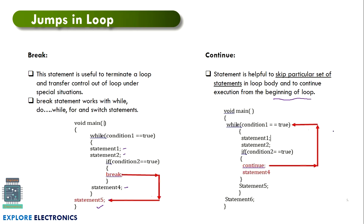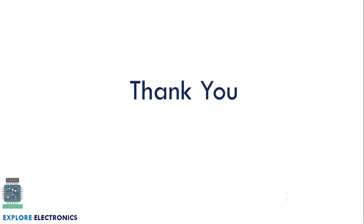The continue statement will skip a particular set of statements in the loop and transfer control back to the beginning of the loop. In a while loop, if condition two is true and we have written continue, it will skip statement four and go back to the while condition. In the second iteration, statement one, two, and then five and six will be executed — statement four is skipped. We can use continue in situations where we need to skip certain sets of statements. Thank you.